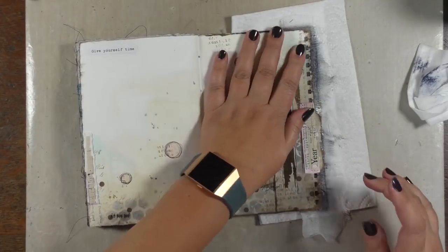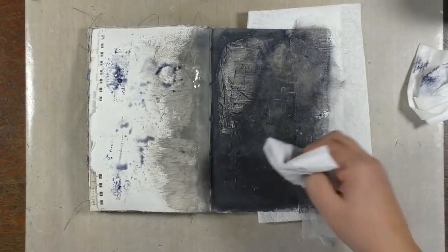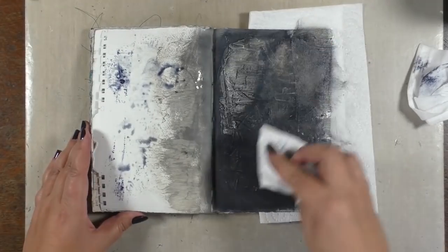And that gives me another idea. Instead of lifting it using a kitchen roll or baby wipes, I can just lift it using the other side of my journal.